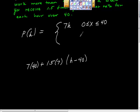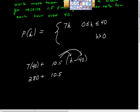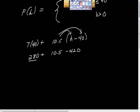Let's simplify that out to an equation for when the number of hours you work is greater than 40. 1.5 times seven is 10.5. I'll distribute: seven times 40 is 280, plus 10.5 times h is 10.5h. And 10.5 times negative 40 is negative 420. Then we can simplify by adding 280 and negative 420. We'll get 10.5h minus 140.